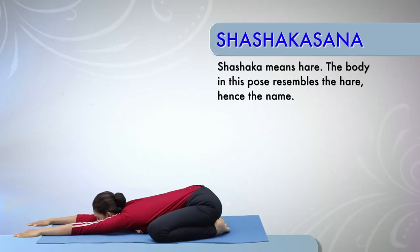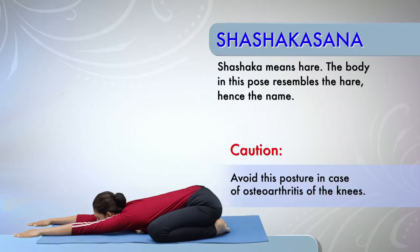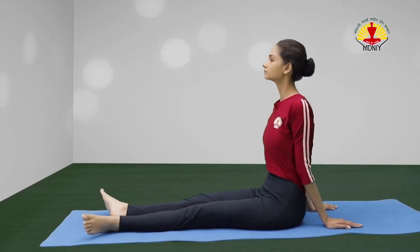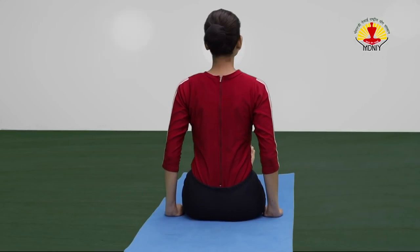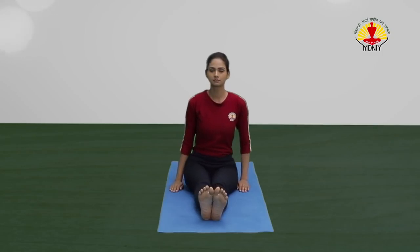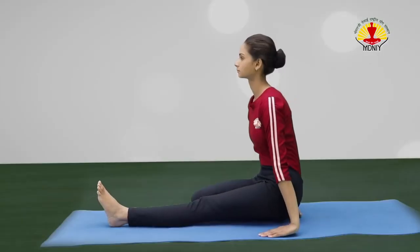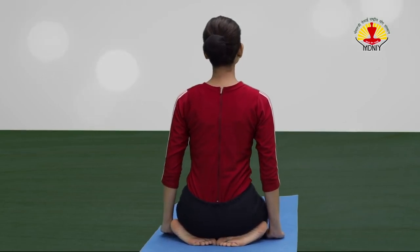Shashakasana or the hare posture. Caution! Avoid this posture in case of osteoarthritis of the knees. Start with long sitting posture. Sit with the back straight, legs stretched out in front, palms resting on the ground, fingers pointing forward. Fold the right leg at the knee and place the foot under the right buttock. Similarly, fold the left leg and place the left foot under the left buttock.